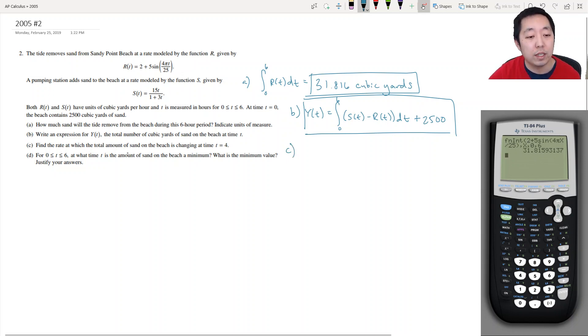Find the rate at which the total amount of sand on the beach is changing at time T equals 4. So again we are finding a rate. And we just described that S of T minus R of T is the rate of change. So we have to just plug in S of 4 minus R of 4.